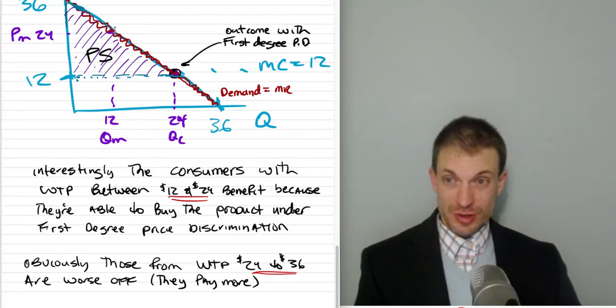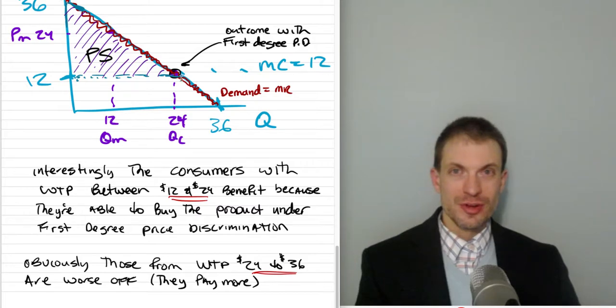So the consumers lying on this part of the demand curve are better off with first-degree price discrimination because they're served, when previously they wouldn't even get this product. These units 12 through 24 weren't even produced by our single price monopolist.